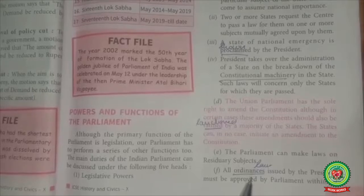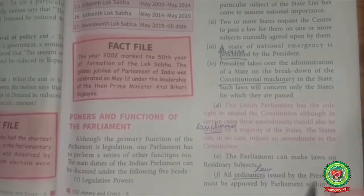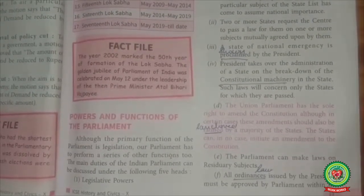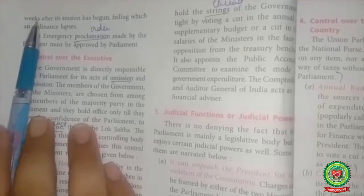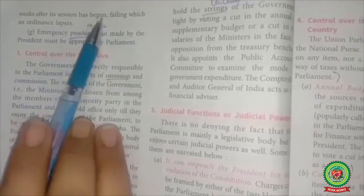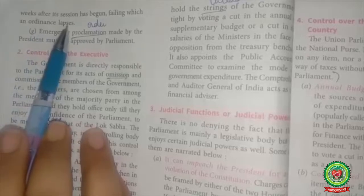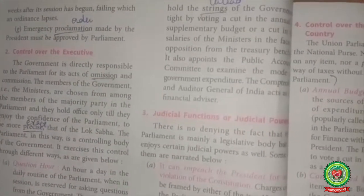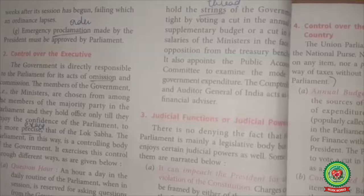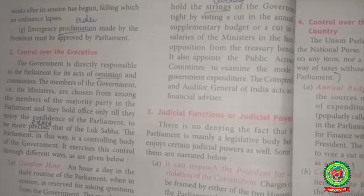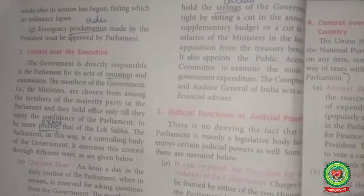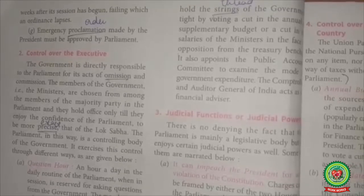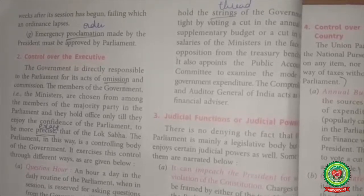All ordinances (means laws issued by the President) must be approved by Parliament within six weeks after its session has begun, failing which an ordinance lapses. The President can issue an ordinance when one of the houses of Parliament is not in session. The maximum validity of an ordinance is six weeks; it will expire after six weeks once both houses of Parliament are in session.